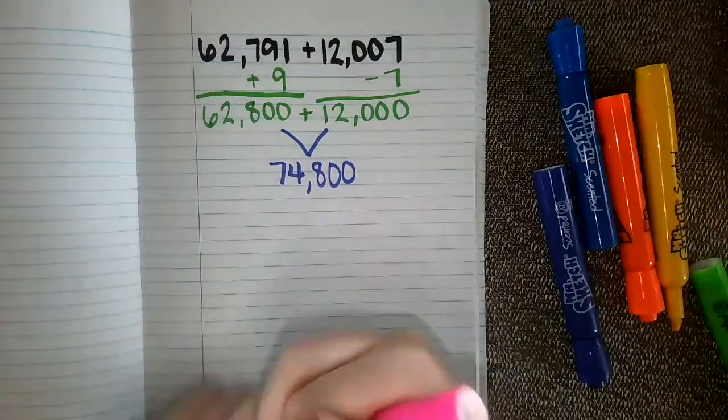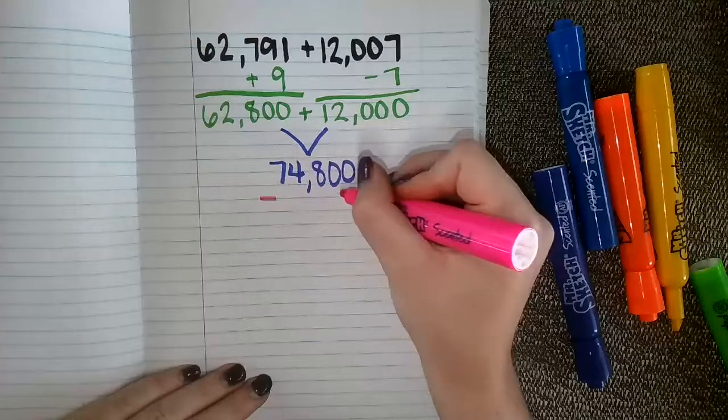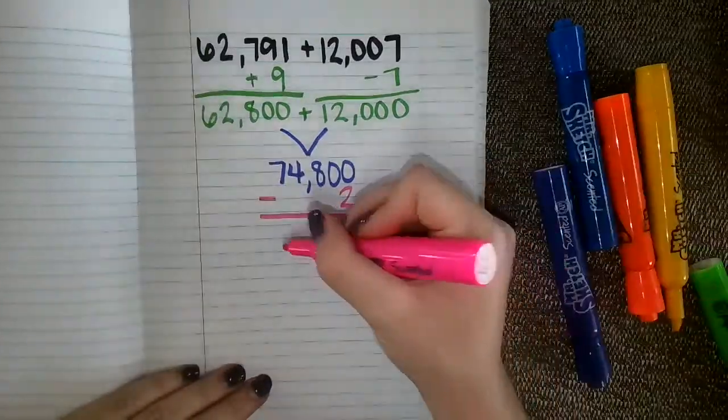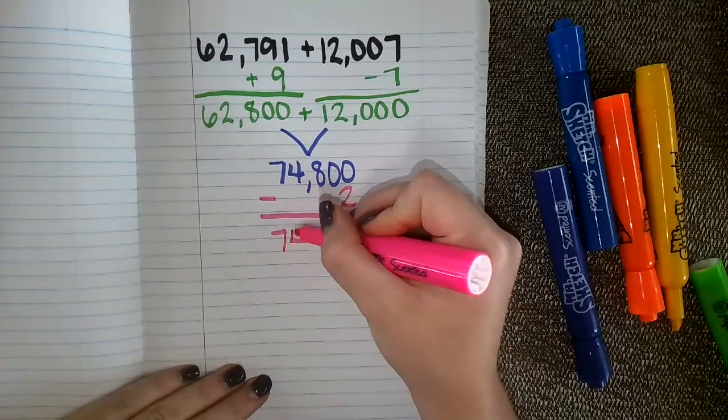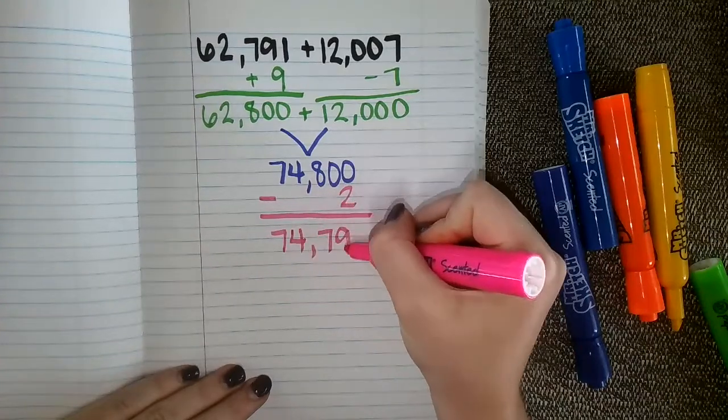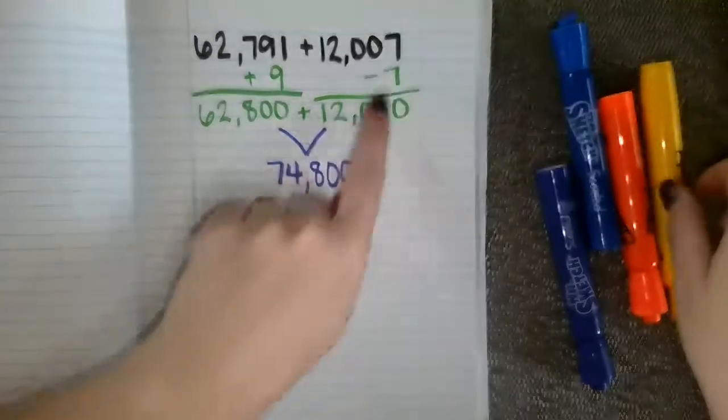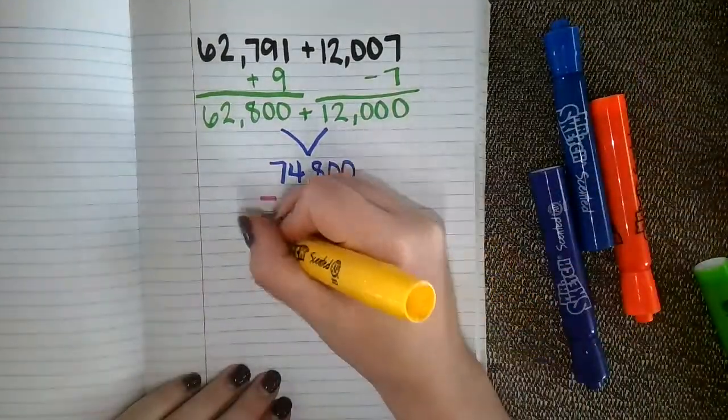And so I am going to take away two from the sum I got from my friendly numbers, and that'll leave me with seventy-four thousand seven hundred ninety-eight. And then I kind of undid those changes that I made to my original problems.